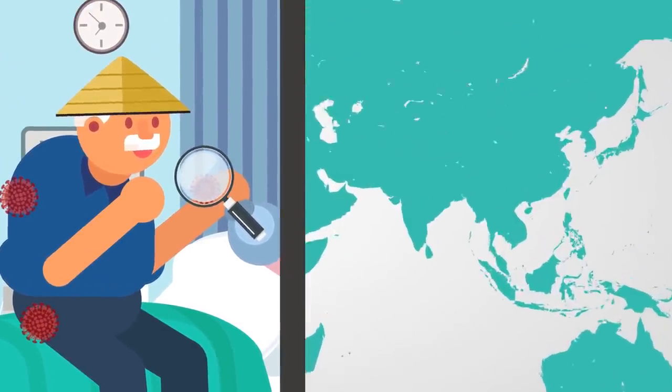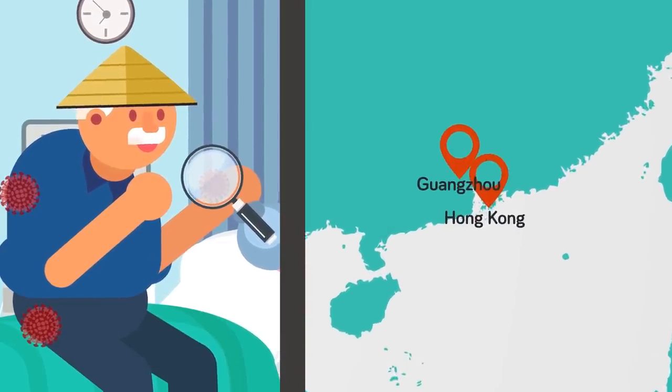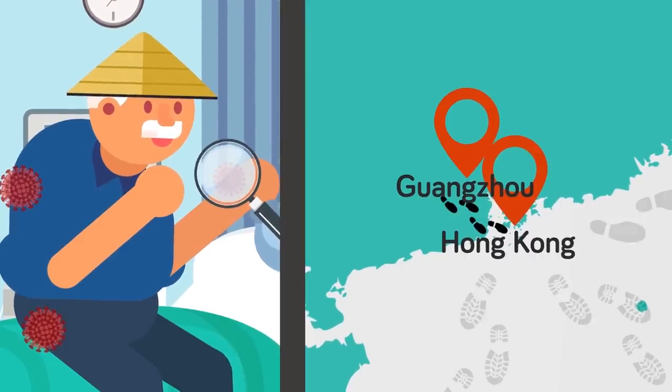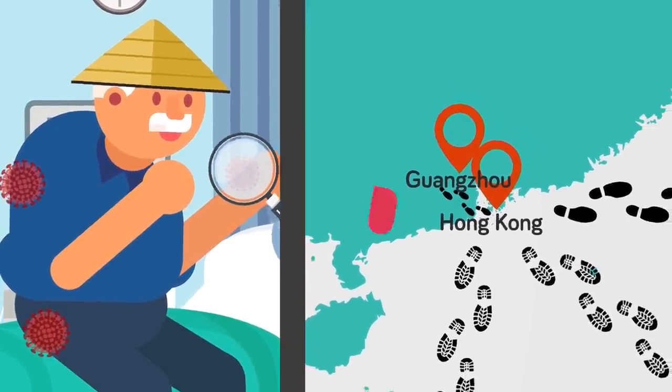One of those infected would be a doctor named Liu Jianlun, who would go on to spread the disease to Hong Kong. And once the disease reached Hong Kong, the worst consequence that the Chinese government had fought so hard to prevent would come to pass. The mystery disease would go global.